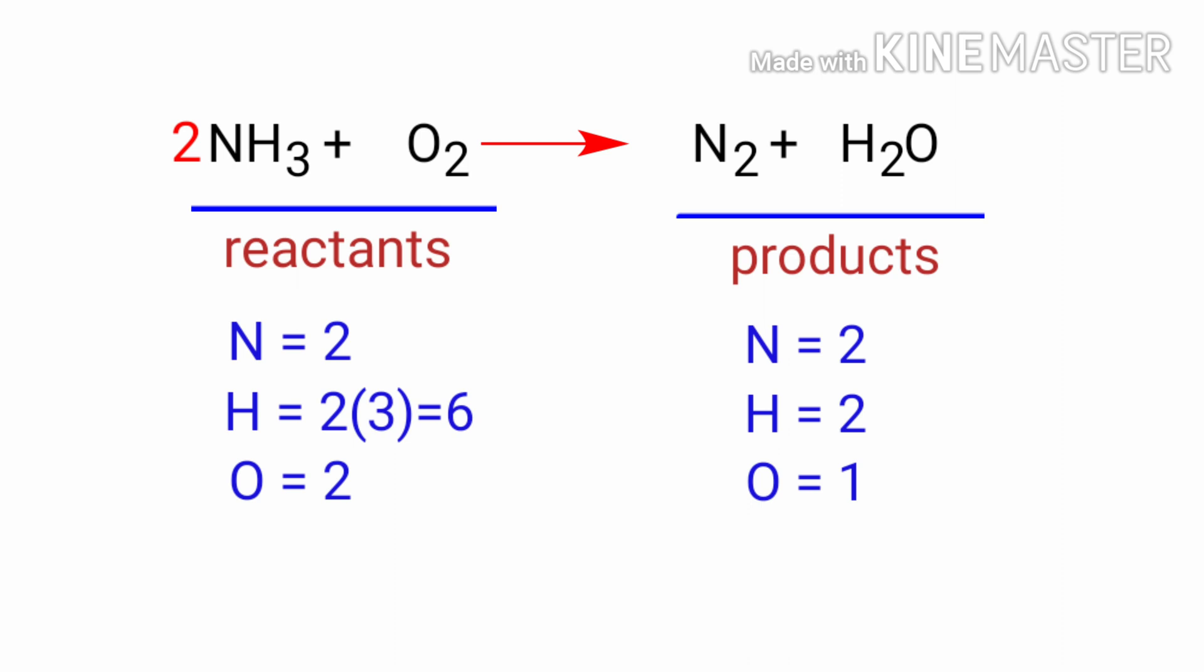Now we need to balance the hydrogen atoms. To do this, we need to put a coefficient of 3 in front of H2O. The hydrogen atoms are balanced.